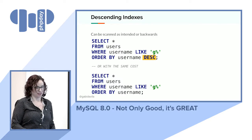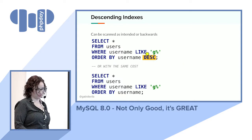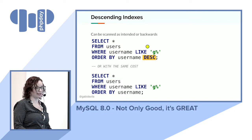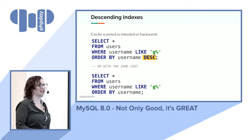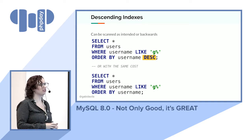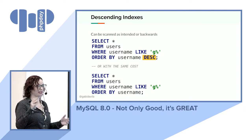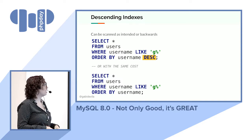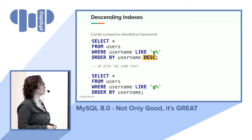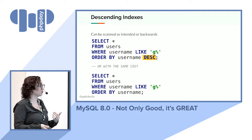This is an example of the descending index in use. Running a query with ORDER BY username DESC will use the descending index. But if you do the same query in ascending order, it'll still use the same index — you don't need a separate ascending index. However, if you have a multi-column index, the direction matters because it can't reverse both columns at once. For a single-column index, create whichever direction you use most and queries in the opposite direction will still use it.